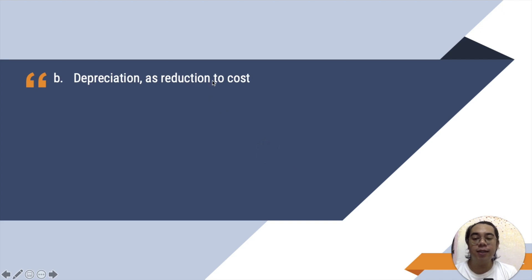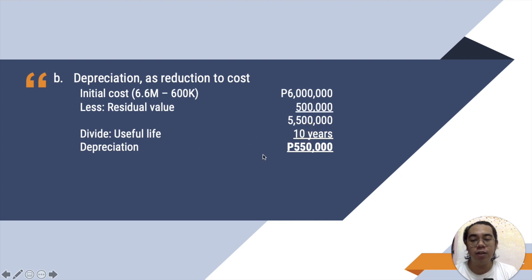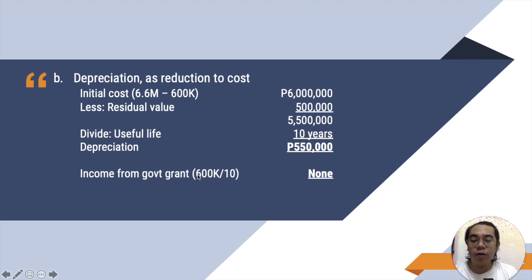For letter B — if we treat the grant initially as reduction to cost: the initial cost will now be $6,000,000 ($6,600,000 minus the $600,000 grant), less the residual value of $500,000, giving a depreciable cost of $5,500,000 divided by the useful life of 10 years, so depreciation every year is $550,000. There is no income from government grant since no deferred income was recognized, and the total effect on profit or loss is $550,000, all as depreciation expense.